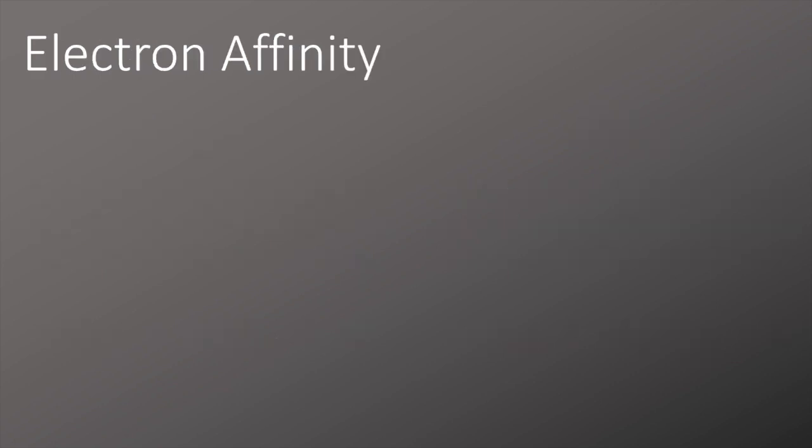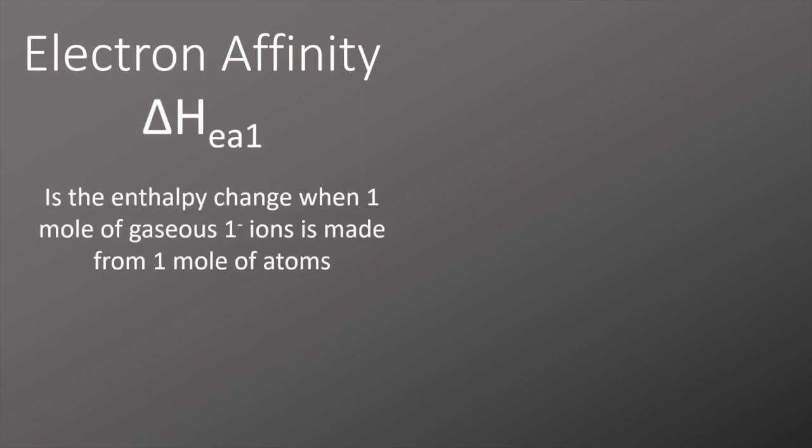When we talk about electron affinity, we're talking about adding electrons to atoms or ions. The first electron affinity delta HEA1 is defined as the enthalpy change when one mole of gaseous one minus ions is made from one mole of atoms. This can be shown by the equation oxygen plus an electron forms an oxygen ion.